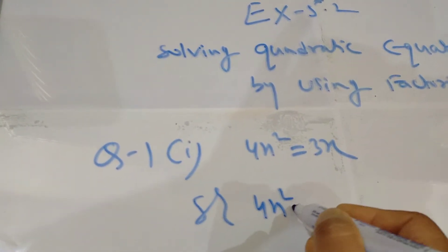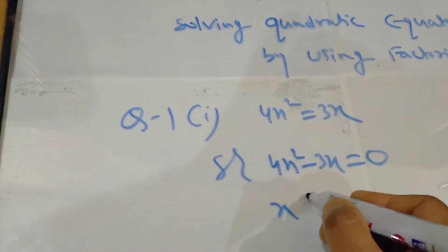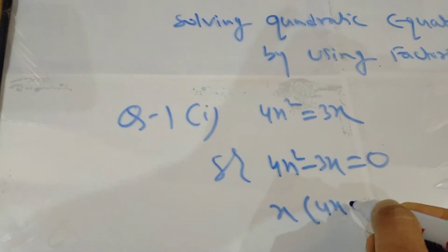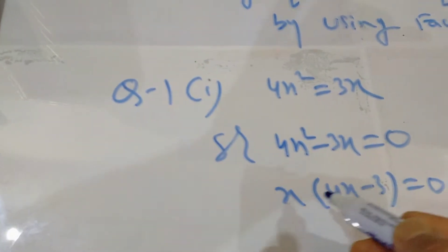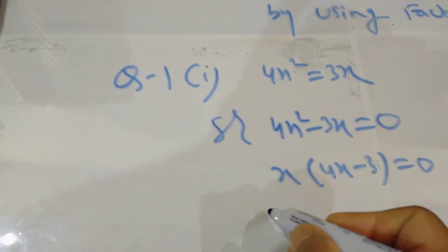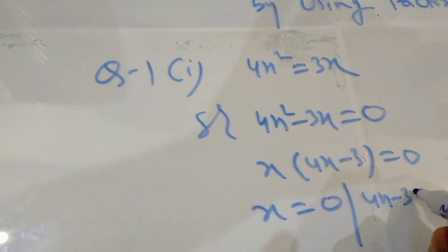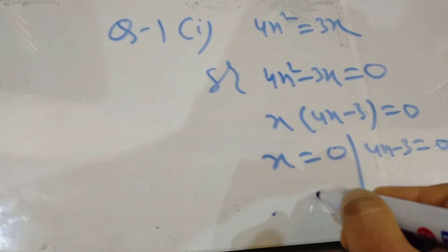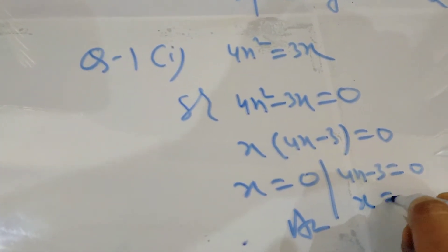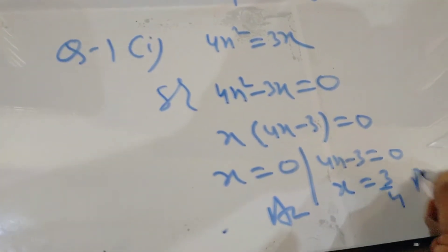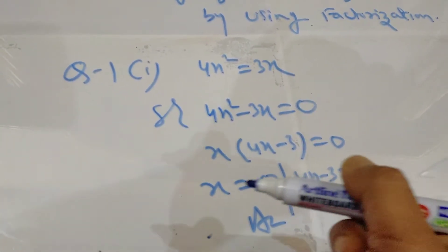For factorization, what you have to do: 4x² − 3x — I shifted from right to left. Now x is common, so it will be x(4x − 3) = 0. Now we have the zero product rule, which means two factors are equal to 0, so individually each factor is equal to 0. The first answer is x = 0, and solving 4x − 3 = 0 gives x = 3/4 as the second answer. These two are called solutions or roots of the quadratic equation.